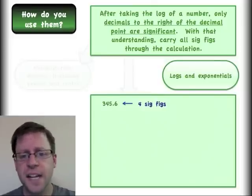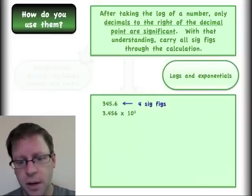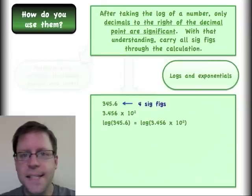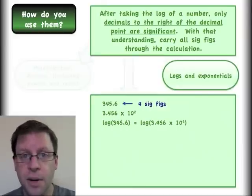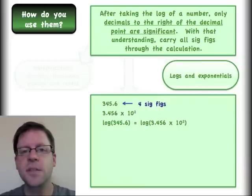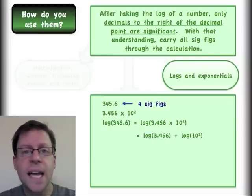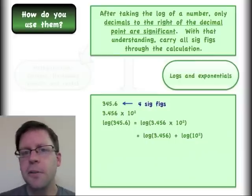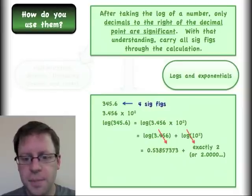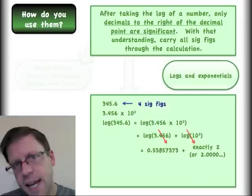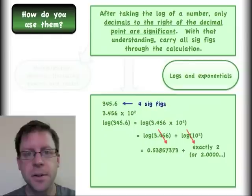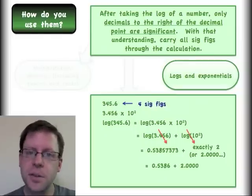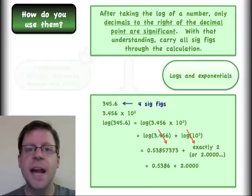Let me show an example of this. Let's just take this number that has 4 sig figs. I'm going to put it in scientific notation, so here it is. Now I'm going to take the log of this number. I'm going to use the property of logarithms where log of a times b is equal to log of a plus log of b. So I can split it up. Now I'm going to reduce each of these to a number here. The first term is going to go to this 0.5385 and so on number. The second term, though, is interesting because it is exactly 2 or an infinite number of sig figs, 2.000, etc.